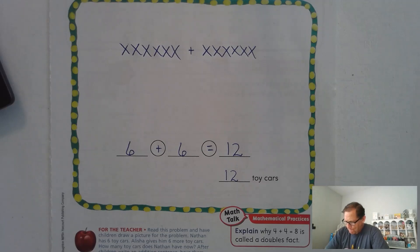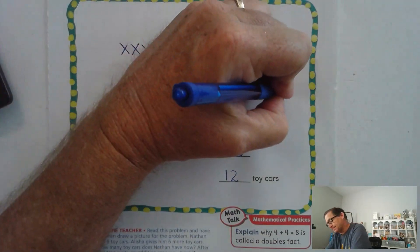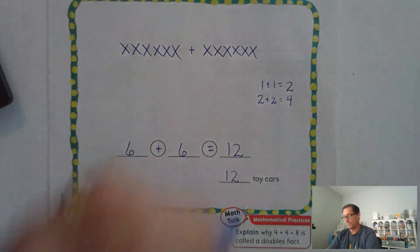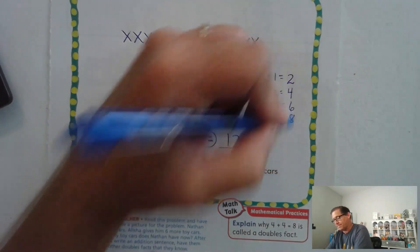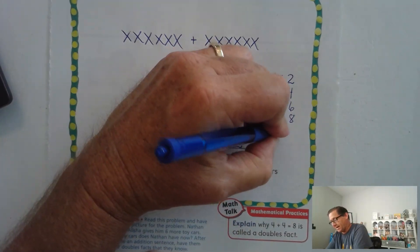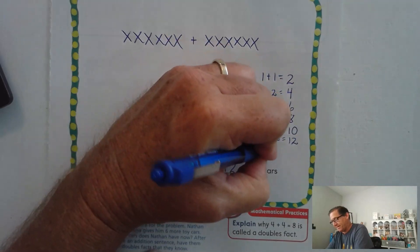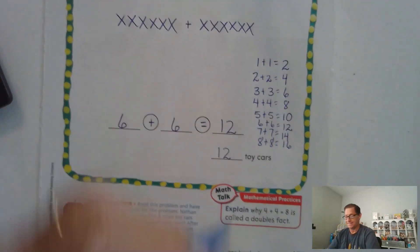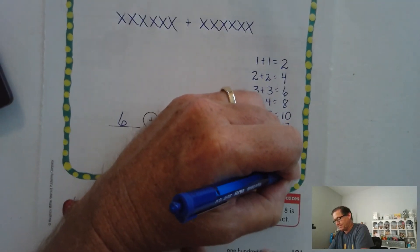What are some other double facts that you know? Let's write them. Starting with the simplest: 1 plus 1 is 2. 2 plus 2 is 4. 3 plus 3 is 6. 4 plus 4 is 8. 5 plus 5 is 10. 6 plus 6 is 12. 7 plus 7 is 14. 8 plus 8 is 16. 9 plus 9 is 18. And let's go ahead and stop at 10 plus 10, which is 20.